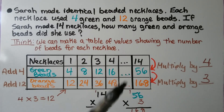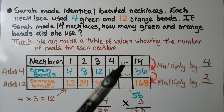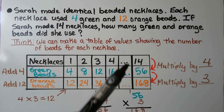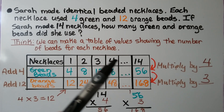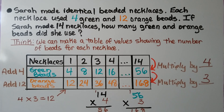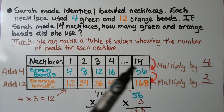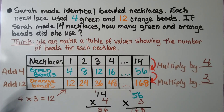Remember, these little dots are a way of saving space so that we don't have to list 5, 6, 7, 8, 9, 10, 11, 12, and 13. We skip from 4 to 14, from 16 to 56, and from 48 to 168.